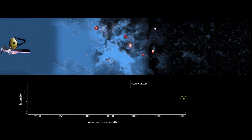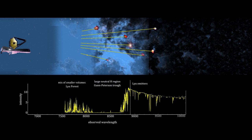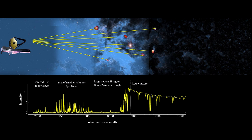As Lyman-Alpha emitters, they will all be sending Lyman-Alpha photons our way. As the photons pass through volumes of molecular hydrogen, we would see Gunn-Petersen troughs. As they pass through space with smaller volumes of molecular hydrogen and smaller volumes of ionized hydrogen, we would see a mix referred to as Lyman-Alpha forests. As they pass through large volumes of ionized hydrogen, we'd see normal emission lines.